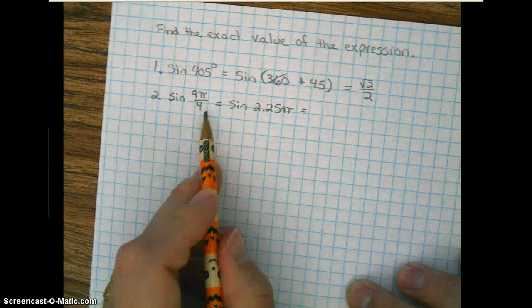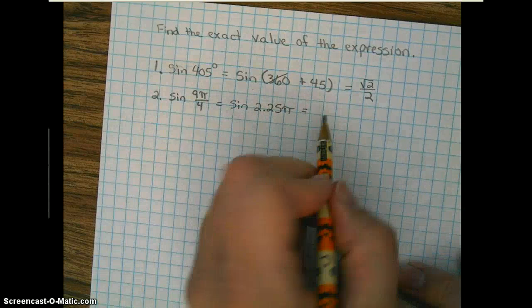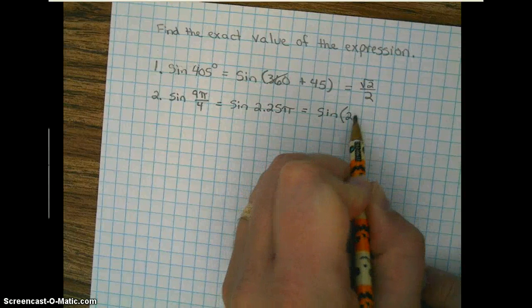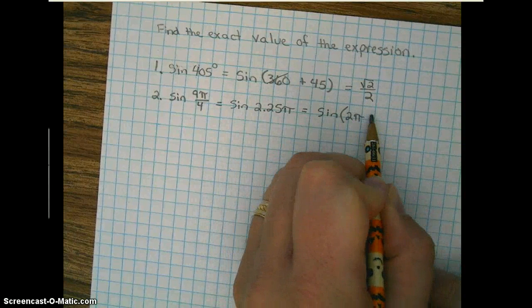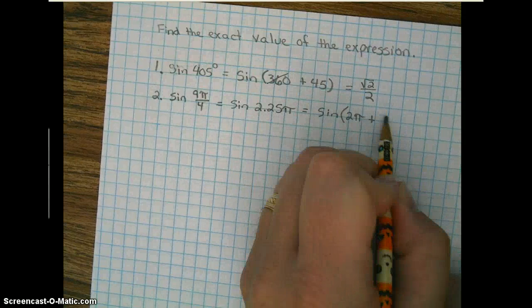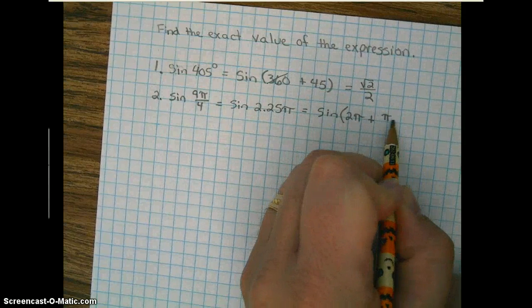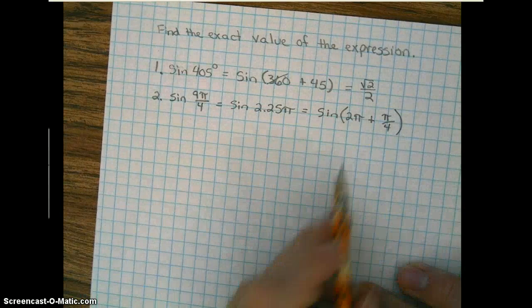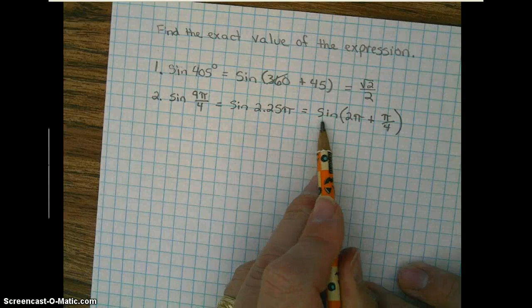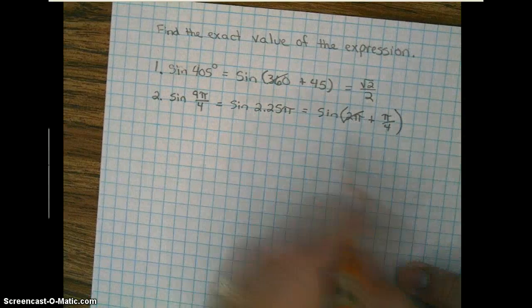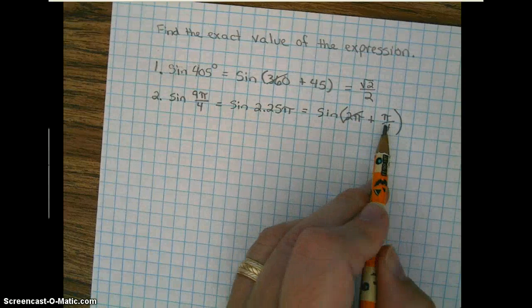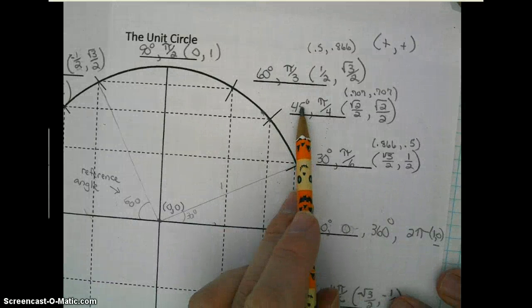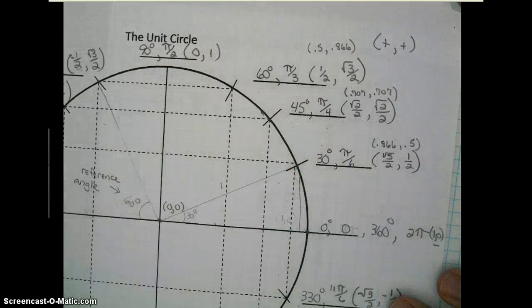So we know that one time around a circle is 2π. So we're going to have the sine of 2π plus a fourth of a π. Again, since the trigonometric functions are periodic, we can go ahead and remove that and find the sine of π over 4 radians. And we are again at 45 degrees, and the sine again is square root of 2 over 2.